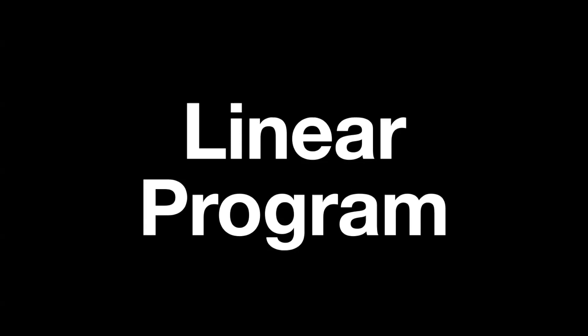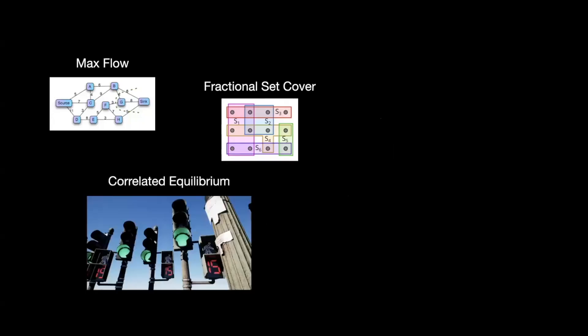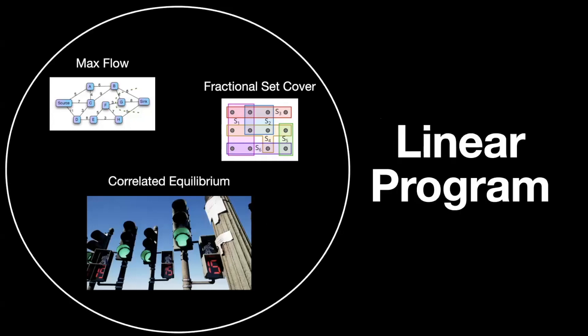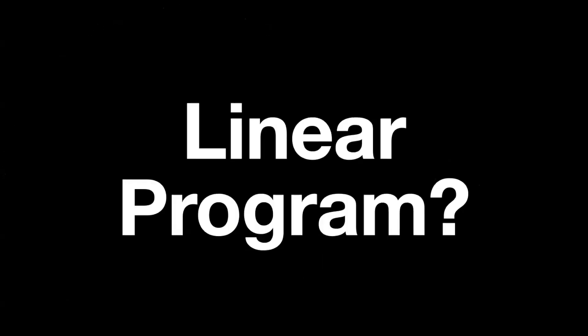If you've taken an algorithms class before, you've probably encountered linear programming. That's because linear programs are essentially the most general form of optimization problems. All your other classic algorithms — like finding the maximal flow over a network, the optimal fractional set cover, computing a correlated equilibrium in a game — are all essentially special types of linear programs, falling under this big umbrella.